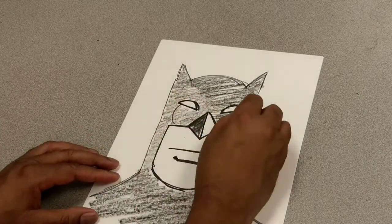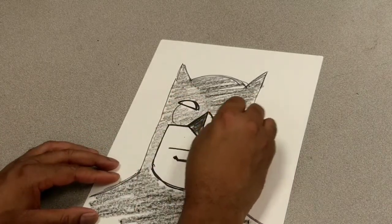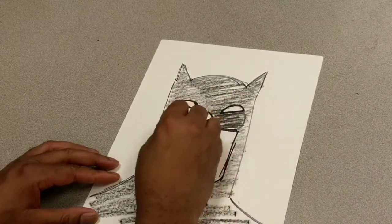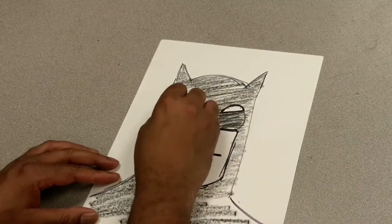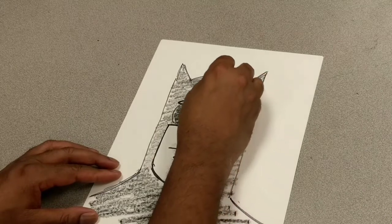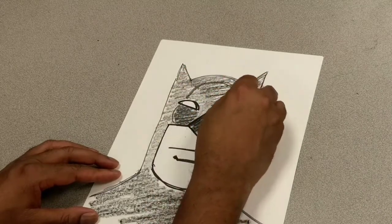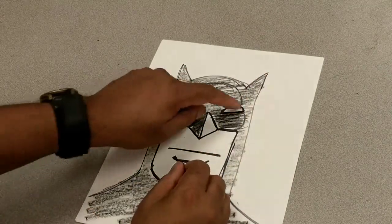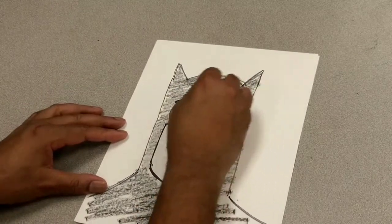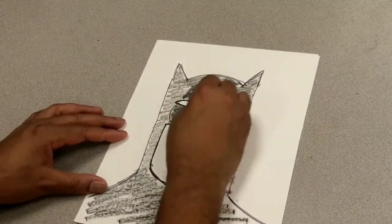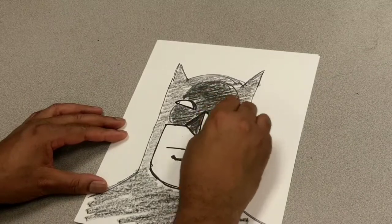If you want to, you can draw some lines in here and darken Batman's mask like this. Make it just a little bit darker. You can make an upside down U in here. Like this. See the U shape? And go back in here and make it darker. If you want. Like that.